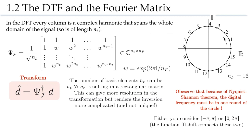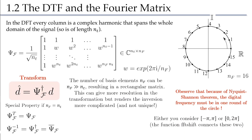To go back and forth easily, it is a good idea to take Nf equal to Nt, making the basis matrix square — the famous Fourier matrix. This matrix has two key properties: first, it is symmetric, so transposition has no effect; second, it is orthonormal, so all columns are orthogonal with unitary length, meaning the inverse equals the conjugate transpose. The well-known FFT algorithm in MATLAB, Python, or other languages is simply a very clever and efficient algorithm to multiply a vector by this matrix.